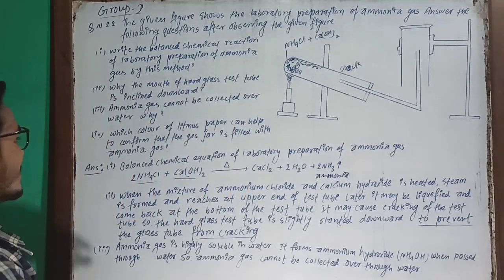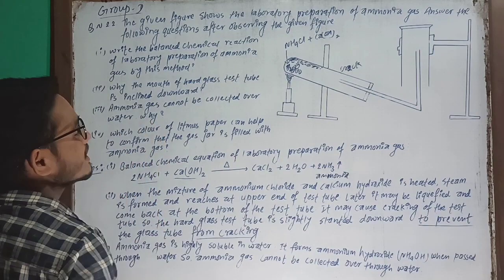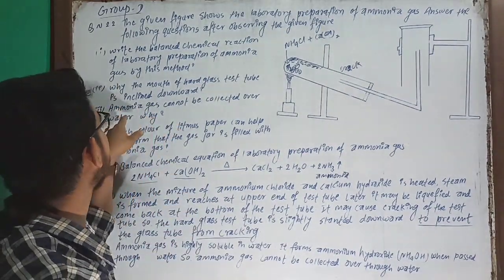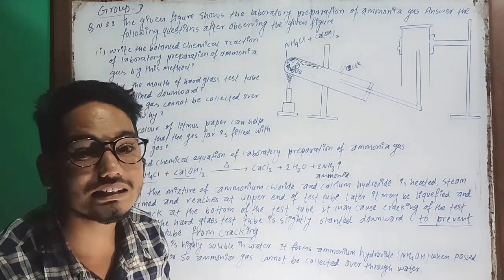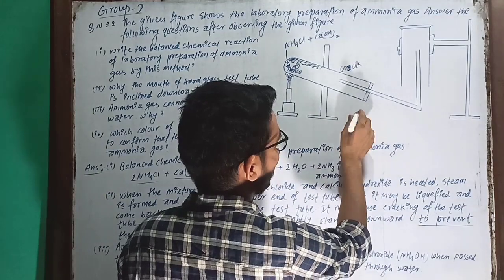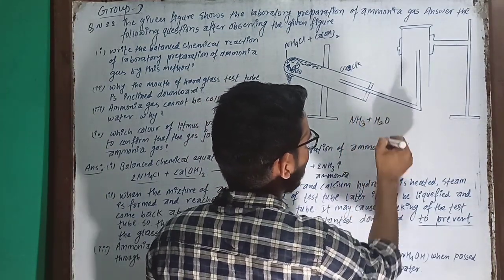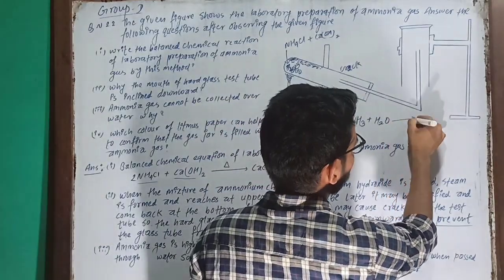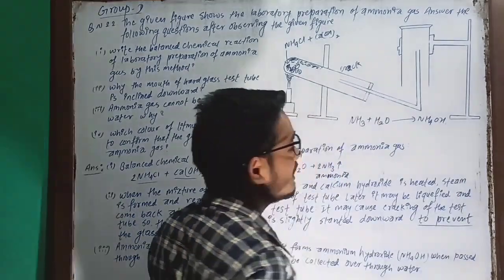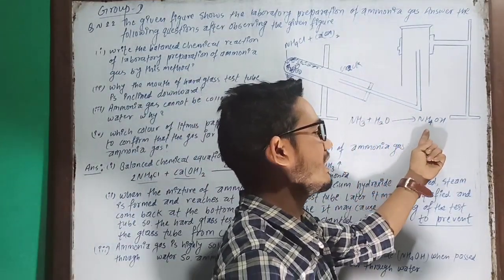The third question is: ammonia gas cannot be collected over water. Ammonia gas has chemical properties — ammonia gas is highly soluble in water, which is why it cannot be collected over water.